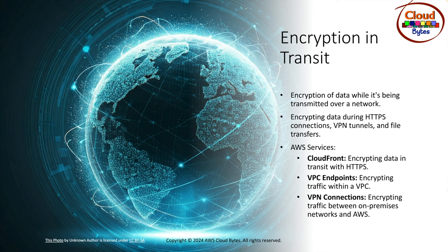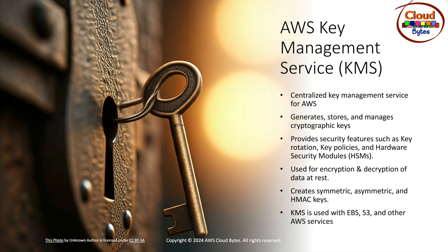VPN connections are about encrypting traffic between your on-premises network and AWS. A site-to-site VPN creates a secure tunnel between on-prem and the AWS VPC, enabling you to extend your on-prem network into the cloud and securely access data. The VPN connection uses the IPSec protocol to encrypt and authenticate data. IPSec provides strong security features including data confidentiality, integrity, and authentication, enabling a secure hybrid cloud infrastructure.